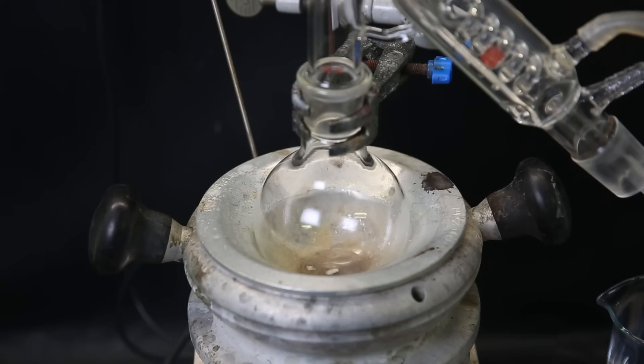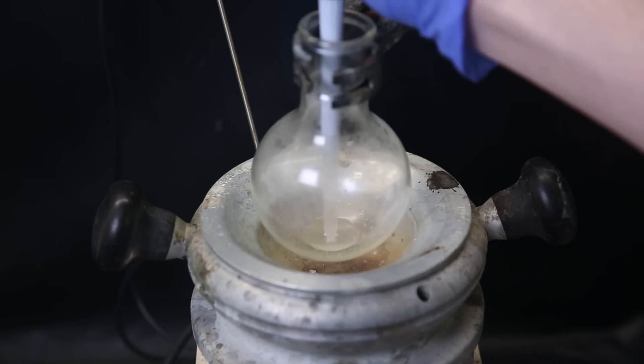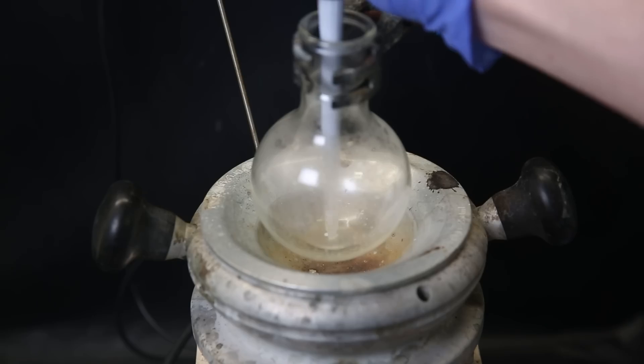I add a tiny stir bar and then distill off all of the ether. When all the ether is gone, some liquid is left behind that should be benzaldehyde. I pipette it all into a vial and it seems to be a bit cloudy, possibly from some water that is remaining.